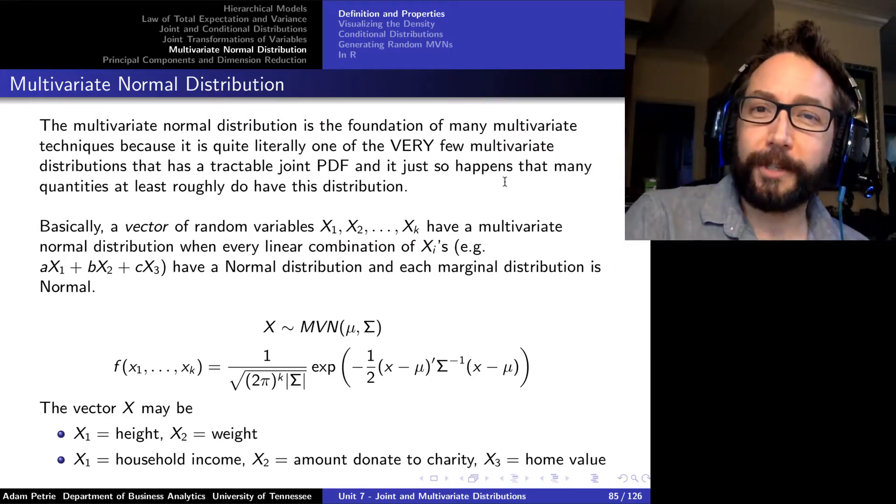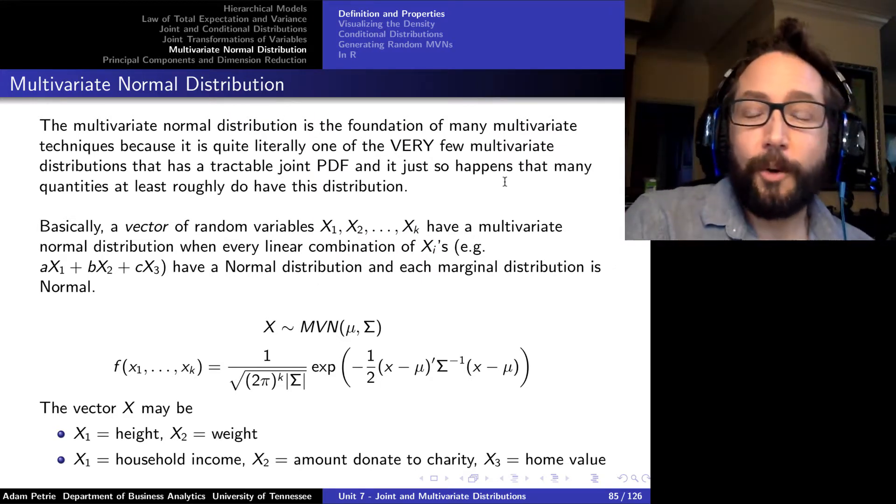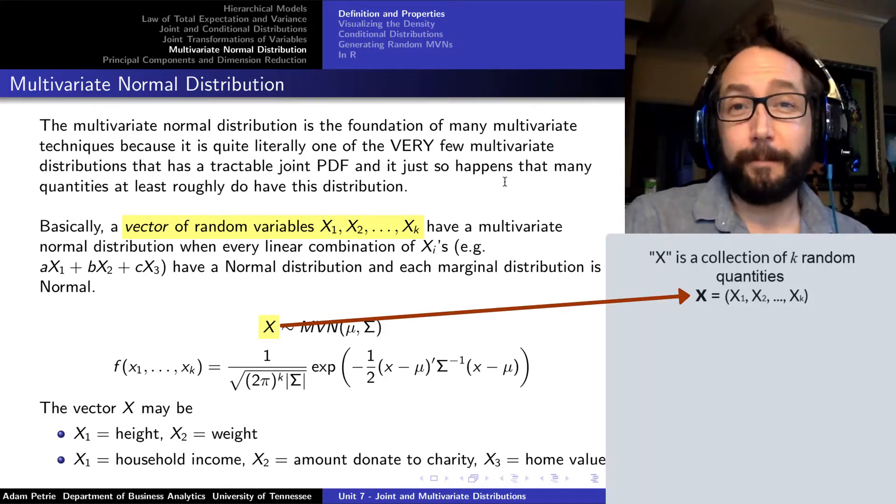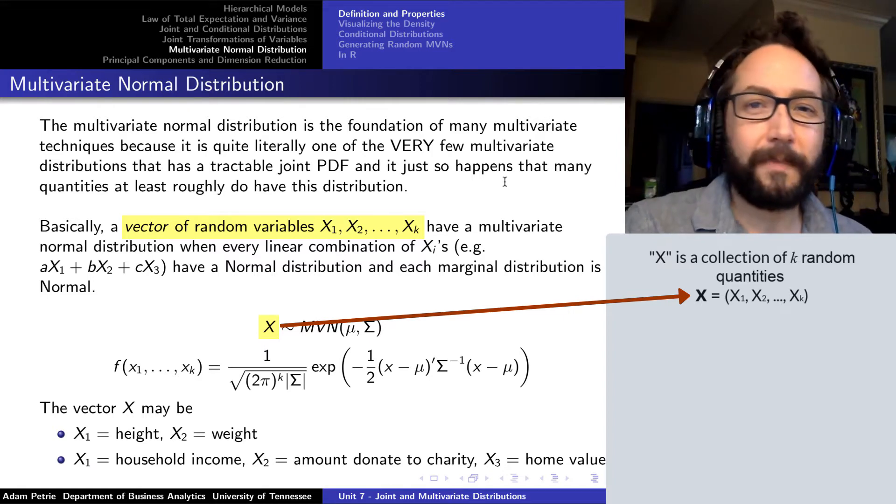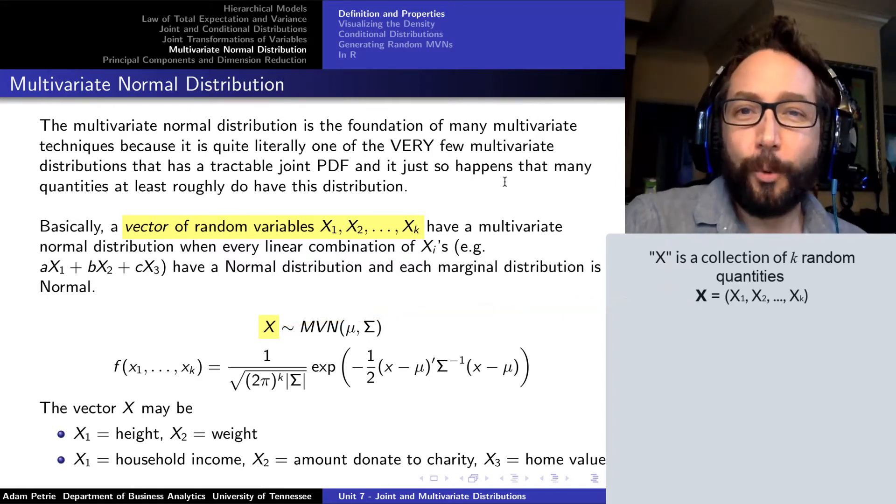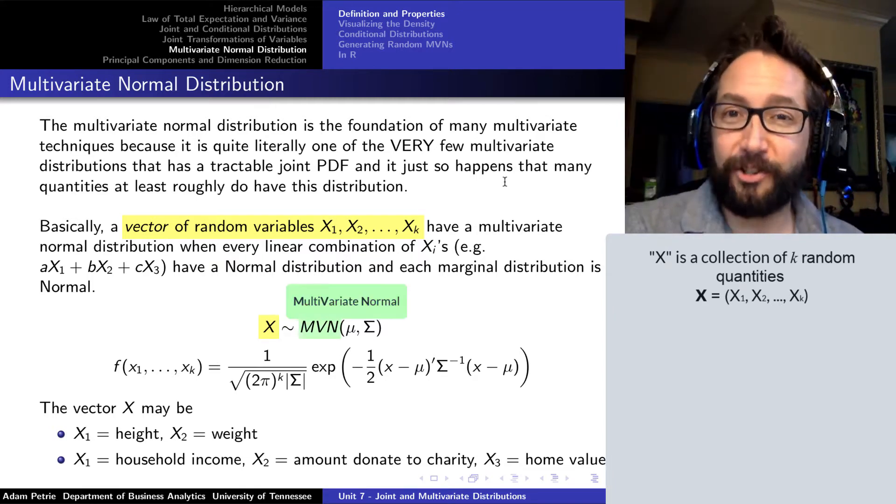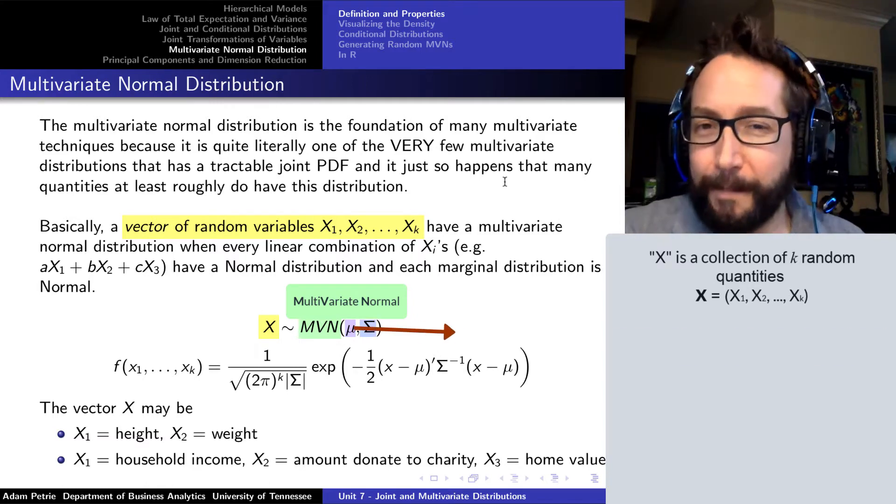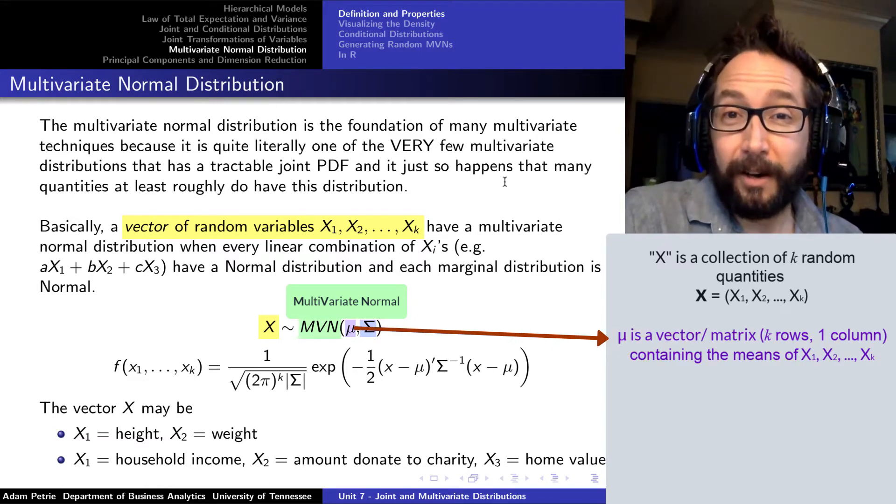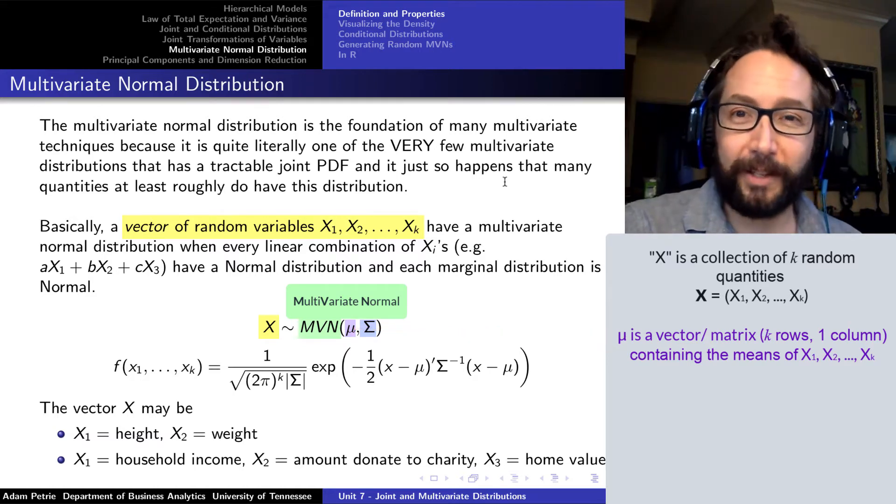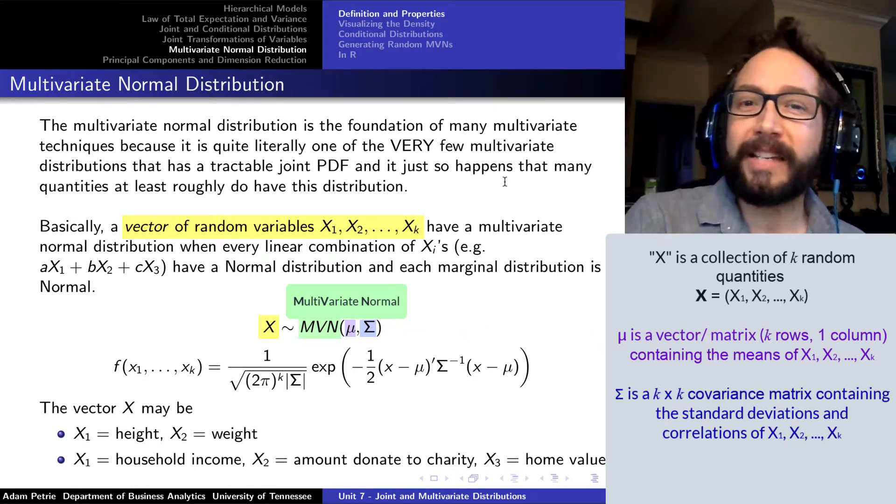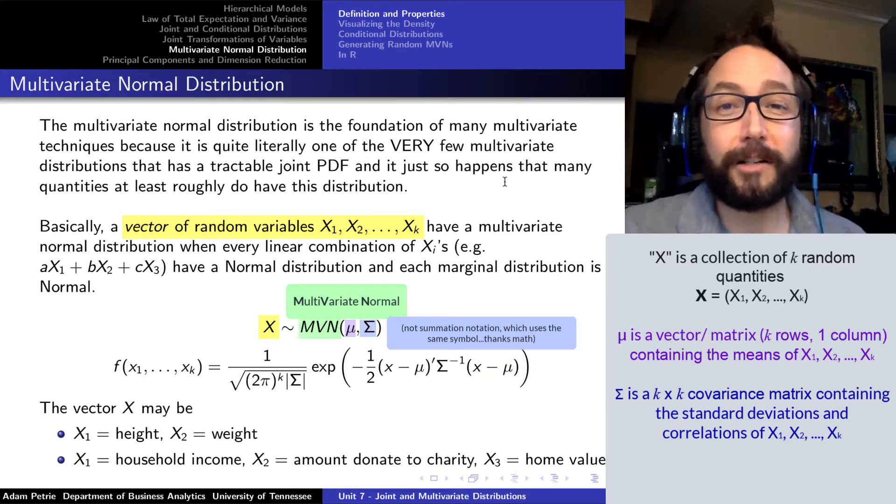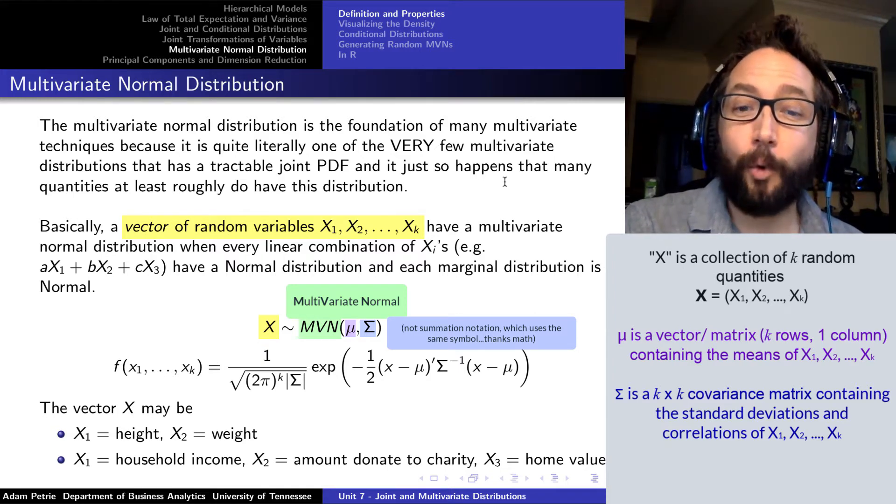Our notation for the multivariate normal distribution will be as follows. We're going to say that our random variable x, which now is shorthand for a particular combination of random quantities x1, x2, x3, etc., we're going to abbreviate that with MVN and say it's distributed with mu and sigma. But mu isn't just a single number, it's a vector of mu's, one for each random variable. And sigma is actually going to be a matrix, the covariance matrix, which talks about how strongly related each of the random quantities are.